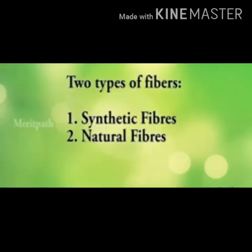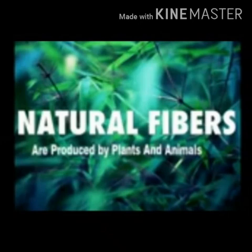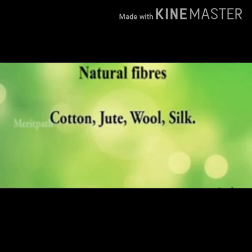There are two types of fibers: synthetic fibers and natural fibers. Natural fibers, as the name suggests, are obtained from nature. They are obtained from plants and animals. Cotton, jute, wool, and silk are examples of natural fibers.